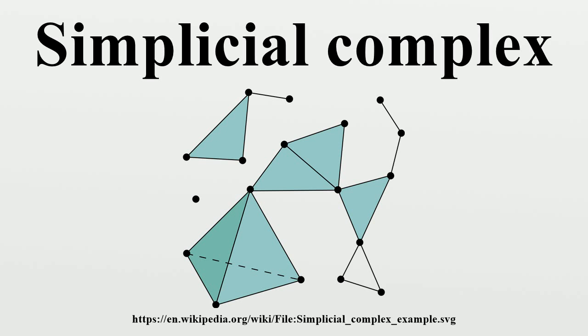For instance, a simplicial two-complex must contain at least one triangle and must not contain any tetrahedra or higher dimensional simplices. A pure or homogeneous simplicial k-complex is a simplicial complex where every simplex of dimension less than k is a face of some simplex of dimension exactly k.